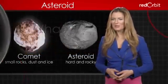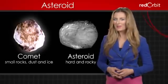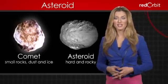Asteroids are small planetary objects orbiting the Sun. Their hard, rocky bodies differentiate them from comets, which are made of small rocks, dust and ice.